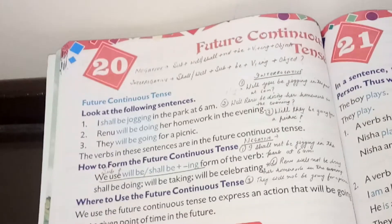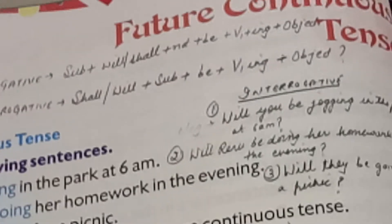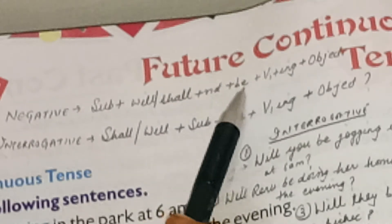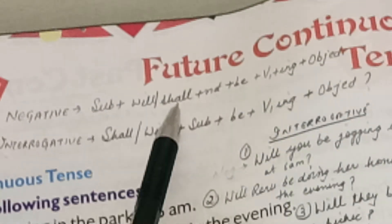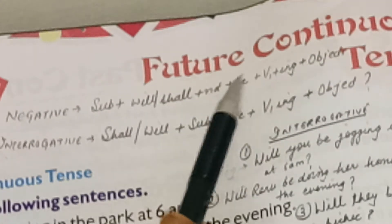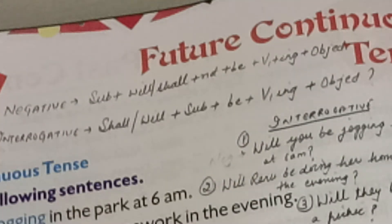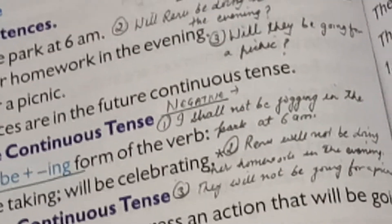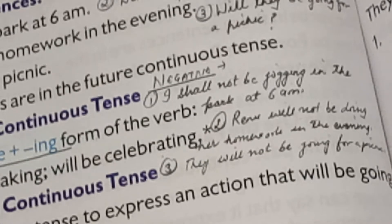Now come to how to make the negative of future continuous tense. You can note down the structure. To make the negative, this is the structure: subject plus will or shall not be — be se pehle not aega, will or shall not be — plus ing form of the verb. Any sentences ko humne negative bana diya, same sentences jo diya thai.